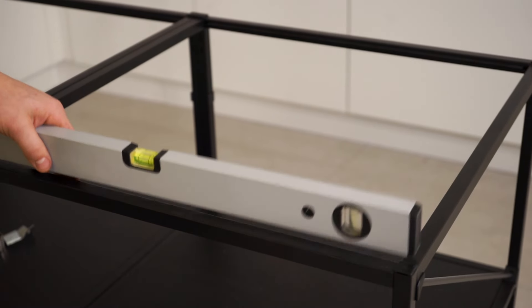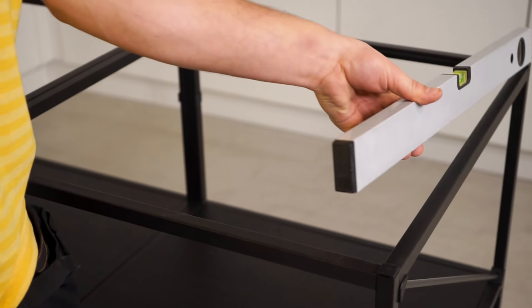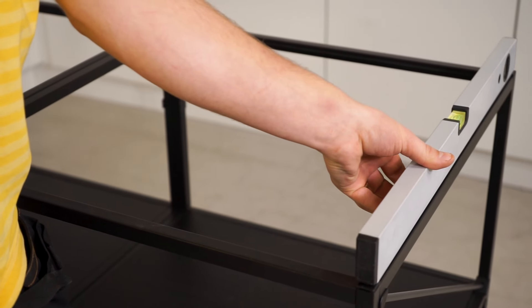Connect the cabinets and level them up with the spirit level. Adjust them along with the legs until your island is even.